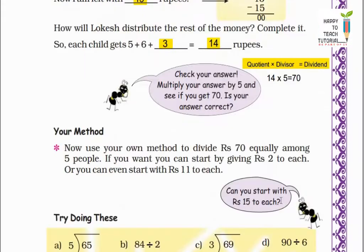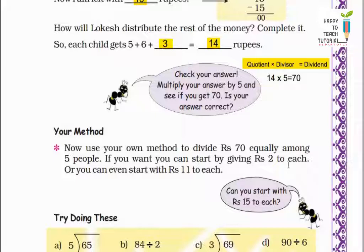Now let's see your method. Jaise ki humne dekha ki Rashi aur Sima ne alag tarike se 70 rupees baante, phir Mridul aur Locis ne alag tarike se 70 rupees baante. So yahan aapko batana hai 70 rupees ko 5 bachchon mein baantne ka aapka tariqa kya hai. Now use your own method to divide rupees 70 equally among 5 people. If you want you can start by giving rupees 2 to each, or even start with rupees 11 to each.